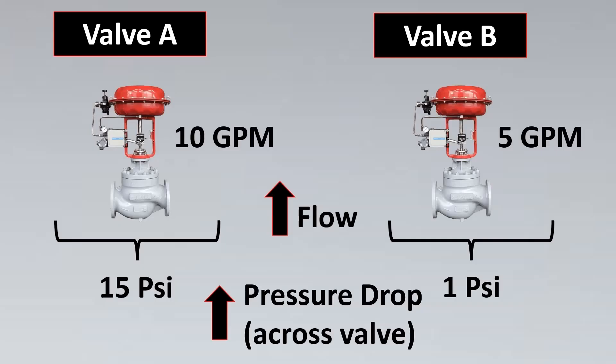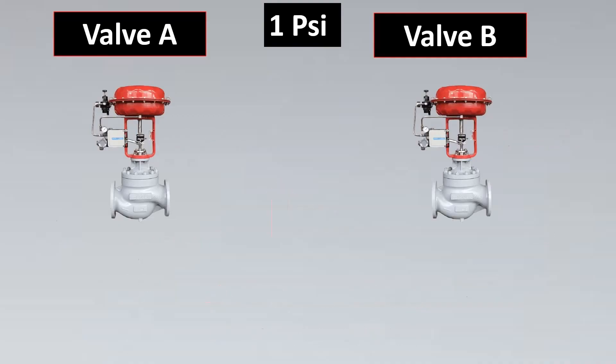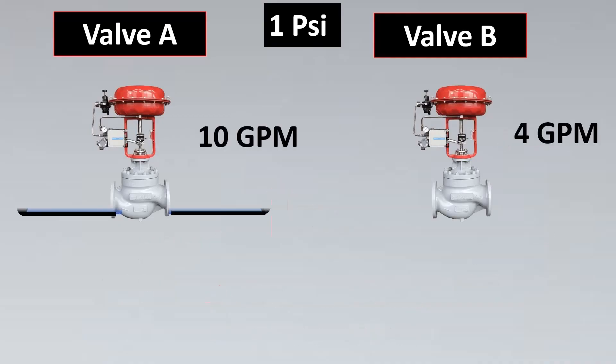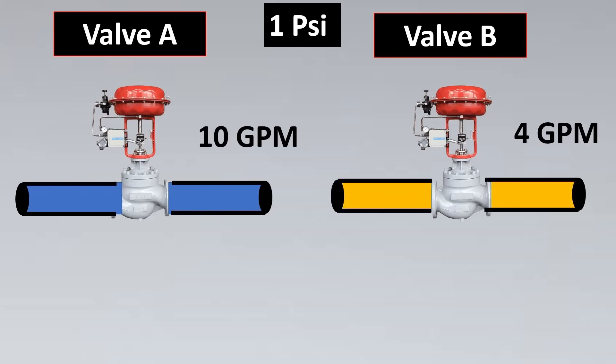So if we want to compare two valves' flow capacity, we have to keep them under the same pressure. Let us take a standard of 1 PSI pressure drop across both valves. Now measuring again, I see the flow through the first valve is 10 GPM and the flow through the second valve is 4 GPM.